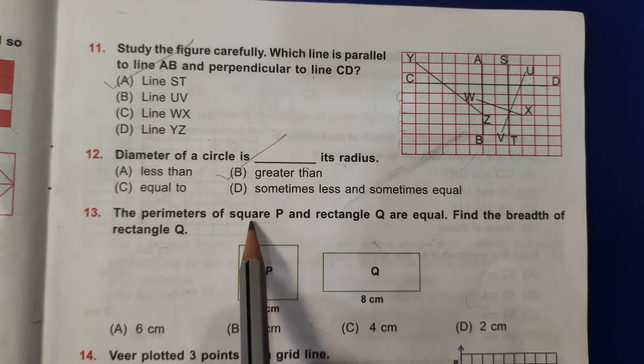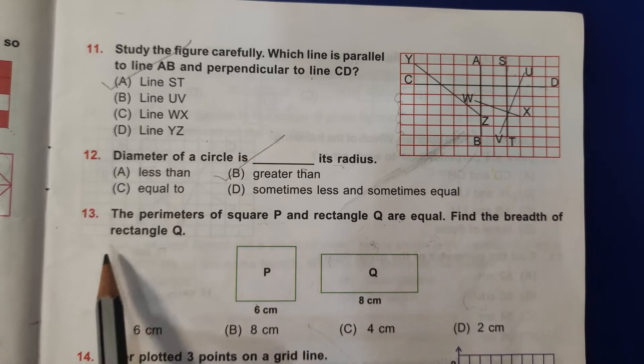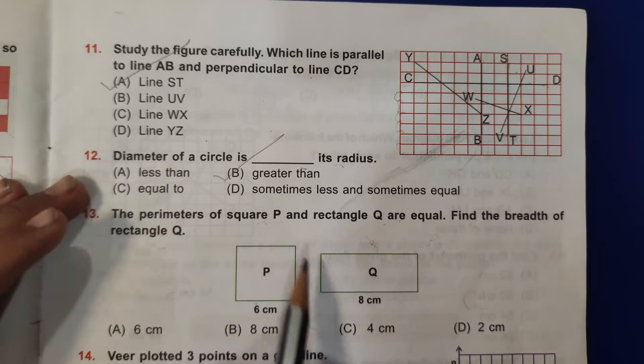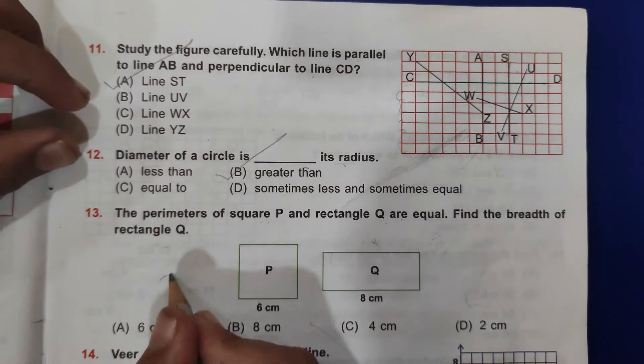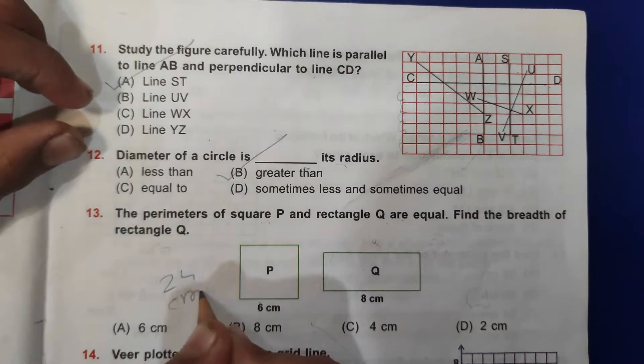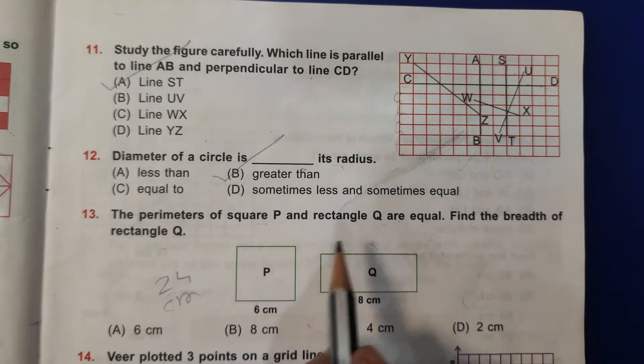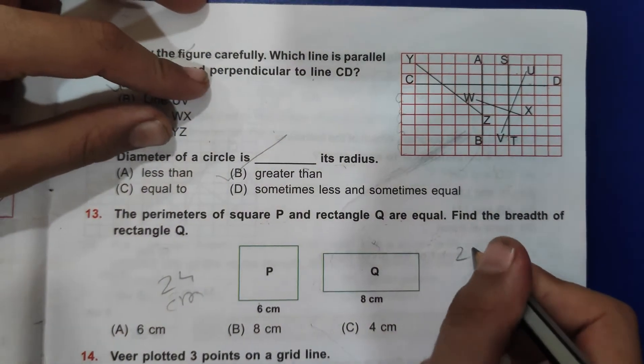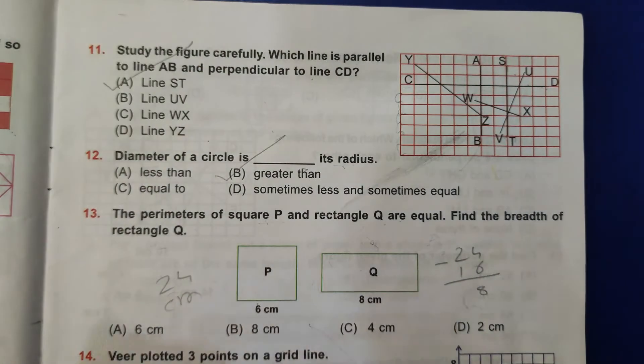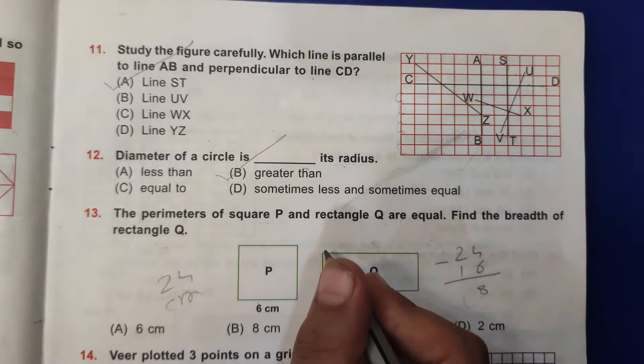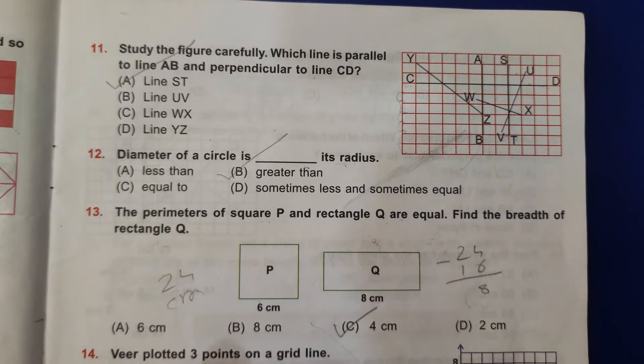Thirteenth question: the perimeter of square P and rectangle Q are equal. Find the breadth of rectangle Q. So 6 times 4 is 24. So means this is 24 centimeters. And means 8 plus 8, that is 16. Now 24 minus 16, it is 8. Now it is of 2, so 8 divided by 2, that is 4. So C is the correct answer.